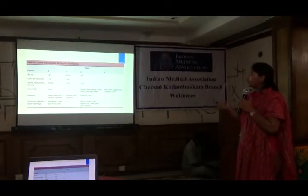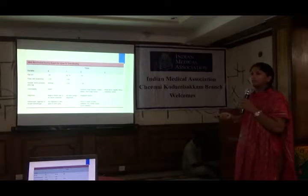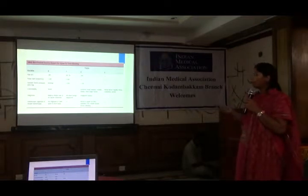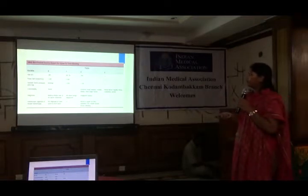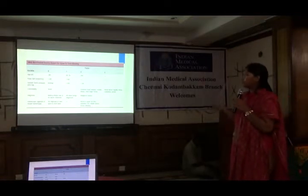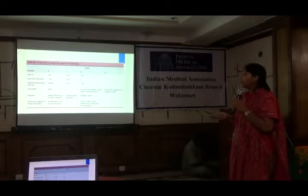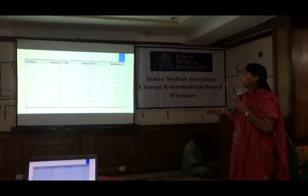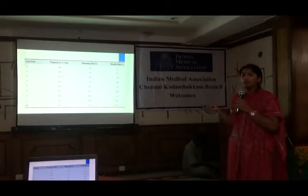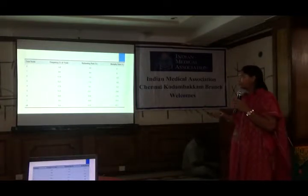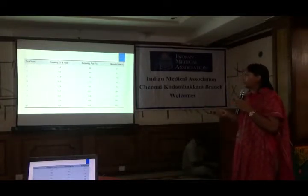There is a scoring system for the severity of GI bleed which includes endoscopic signs. With this scoring system, we can assess the rate of re-bleeding and the mortality rate, which can be explained to the patient.